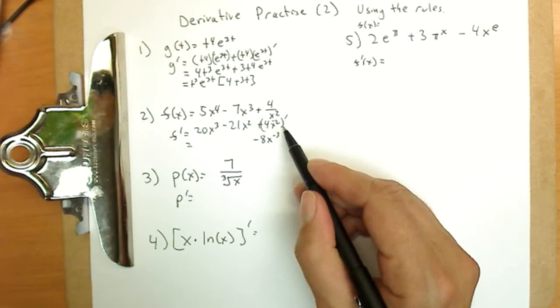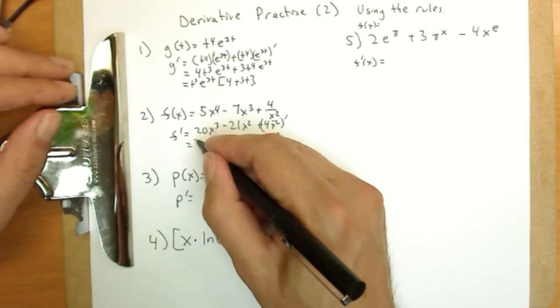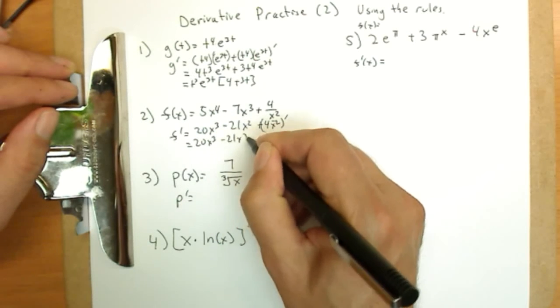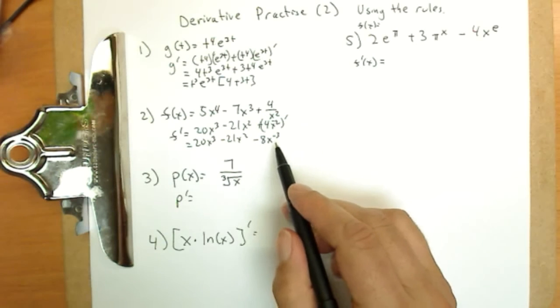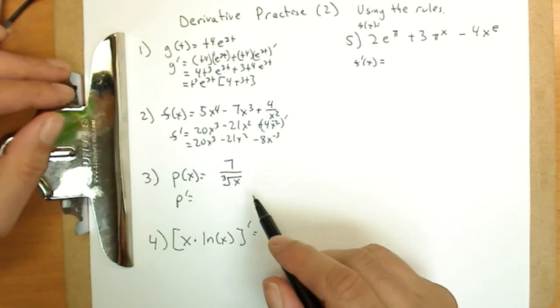Negative two minus one is negative three, using the power rule. So final answer, 20x cubed minus 21x squared minus eight x to the negative three. You can put it back to the bottom as x to the negative three.